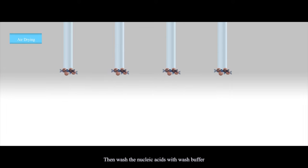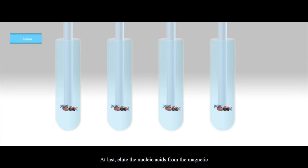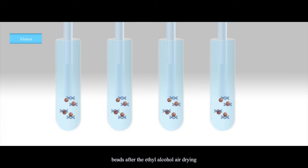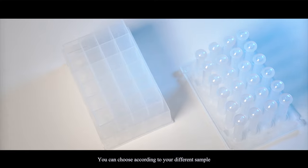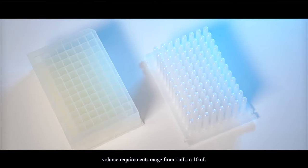Then wash the nucleic acids with wash buffers several times for purification. At last, elute the nucleic acids from the magnetic beads after the ethyl alcohol air drying. You can choose according to your different sample volume requirements ranging from 1 milliliter to 10 milliliters.